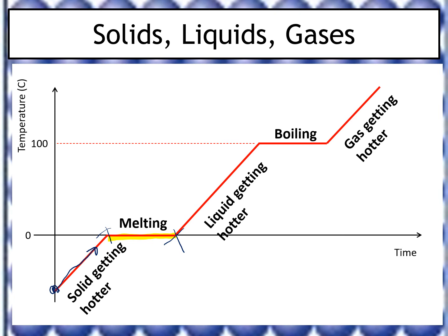As I keep adding energy, the liquid keeps getting hotter until it reaches 100°C — the boiling point of water. At that point we get a very similar plateau: the temperature isn't changing even though I'm still heating the water. Again, the energy isn't making the water hotter; it's breaking the bonds between liquid particles so they can escape into the atmosphere as water vapor. Eventually all of the water has turned into a gas.